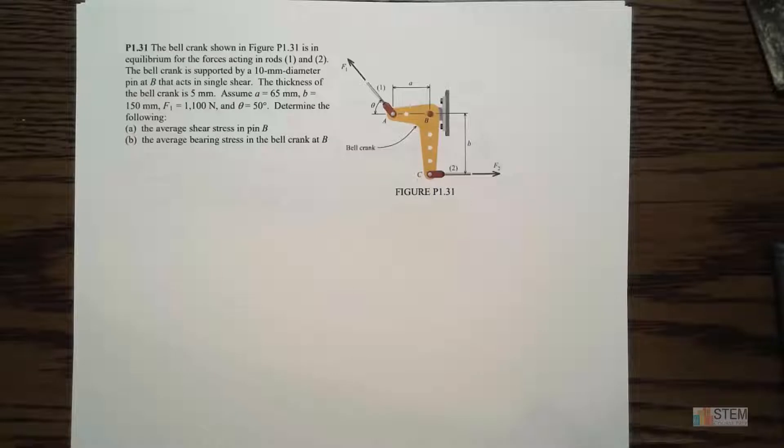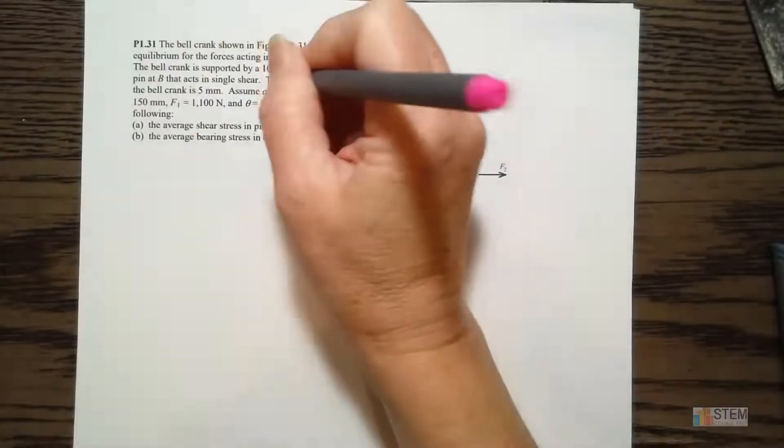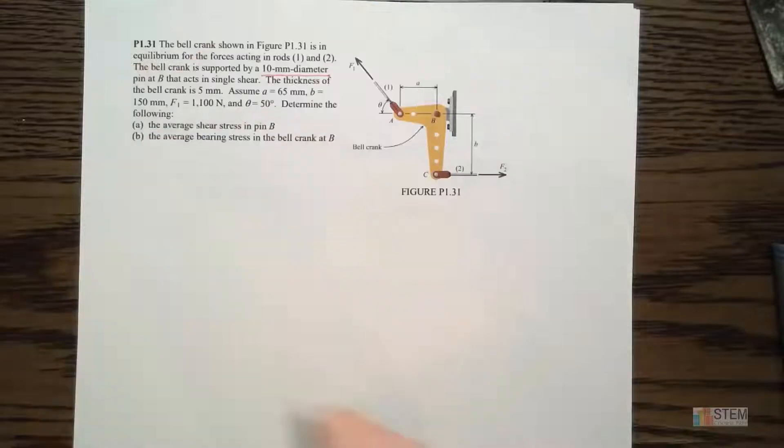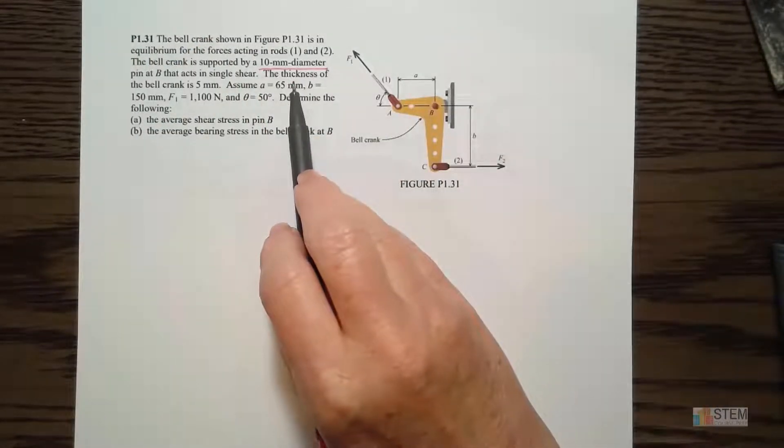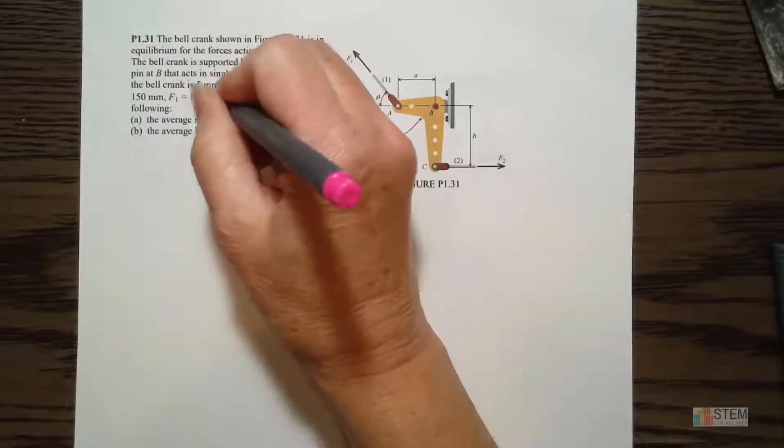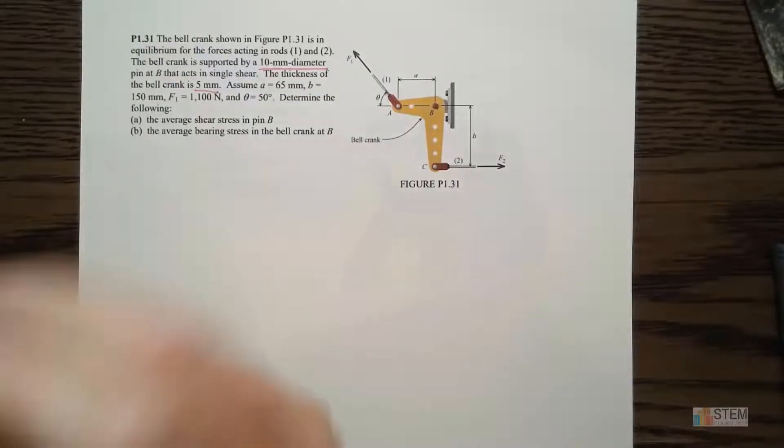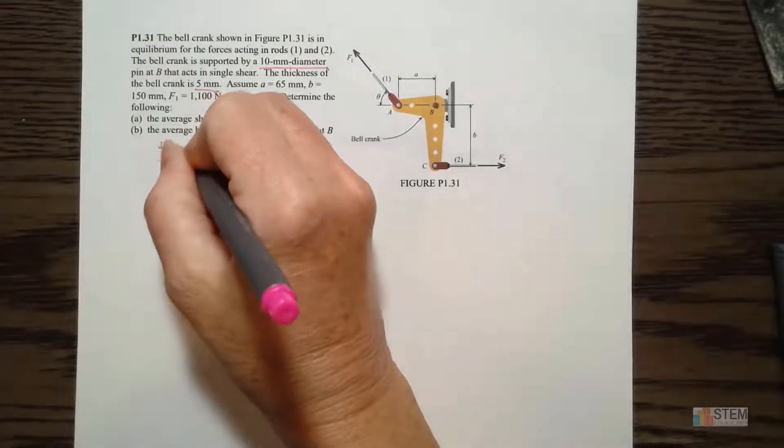This problem says the bell crank shown in the picture is in equilibrium for the forces acting in rods 1 and 2. We have a bell crank supported by a 10 millimeter diameter pin at B that acts in single shear. So here is B, 10 millimeter diameter, that's important. Single shear is important. The thickness of the bell crank is 5 millimeters. We want that, so let's put T is 5 millimeters.